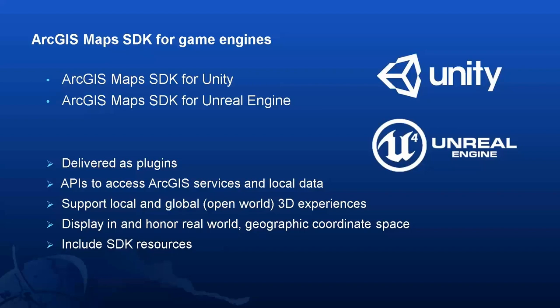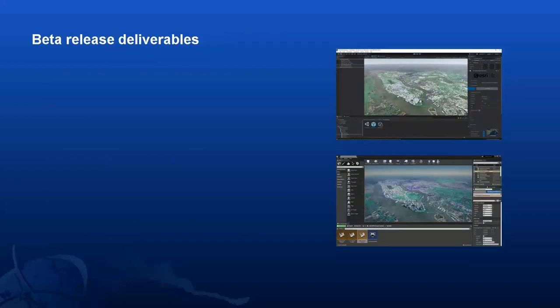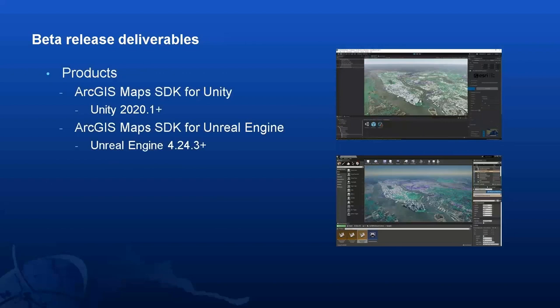So that's the high-level view of these new developer products. Now let's transition to a more practical discussion on what our first beta release will contain and support. The first beta release will consist of two products or plugins: the ArcGIS Maps SDK for Unity and the ArcGIS Maps SDK for Unreal Engine. The Unity plugin will support Unity 2020.1, but should work with newer versions. The Unreal Engine plugin will support Unreal Engine 4.24.3, but should also work with newer versions.